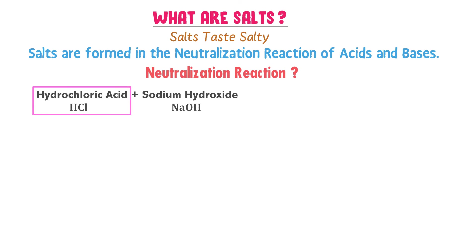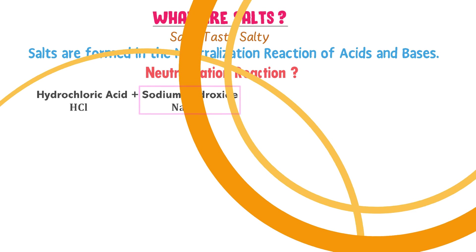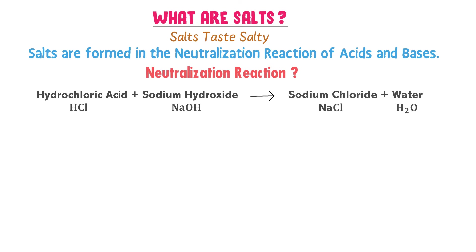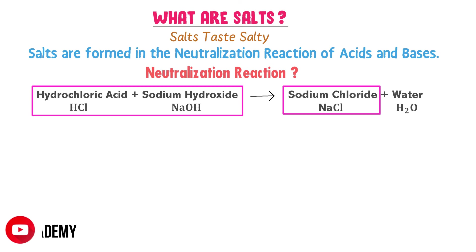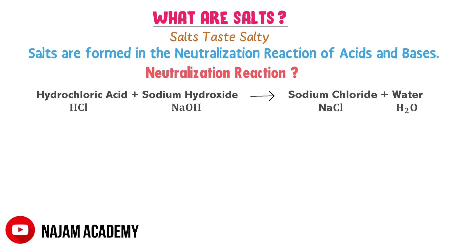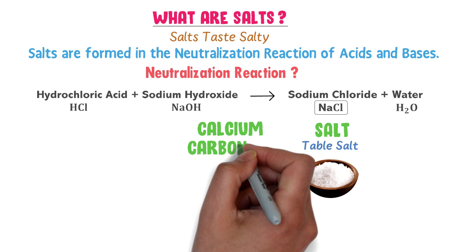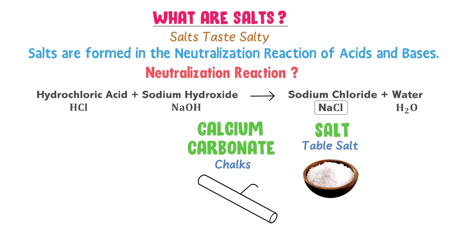HCl is an acid and sodium hydroxide is a base. When this acid and base react with each other, they form sodium chloride and water. Sodium chloride is formed from the reaction of acid and base, and this reaction is called a neutralization reaction because the acid and base neutralize each other. So, this sodium chloride is called a salt. Sodium chloride is also commonly known as table salt. Another example of salt is calcium carbonate, commonly known as chalk.